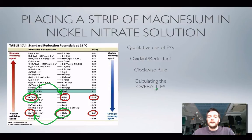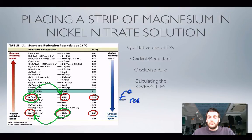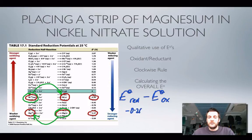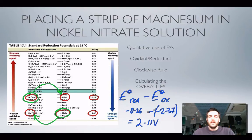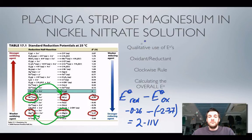The last method is to calculate the overall potential. We take the standard reduction potential for the reduction process and subtract from it the standard reduction potential for the oxidation process. The reduction process is nickel ions gaining electrons, so the standard reduction potential is −0.26 V. Subtracting −2.37 V gives a voltage of +2.11 V. A positive voltage means the reaction is feasible. This is because this equilibrium is better at going to the left than the other one.